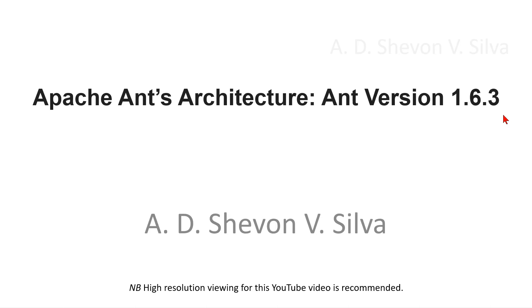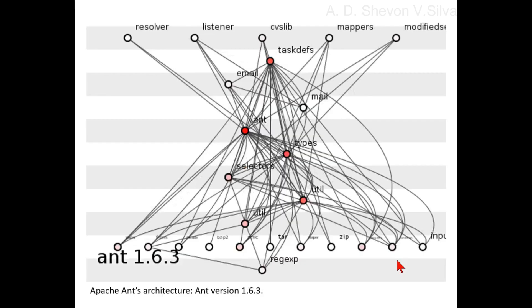Apache Ant architecture, version 1.6.3. Here you can see Ant version 1.6.3 — Apache Ant architecture version 1.6 adds another thousand functions, but it hardly matters.